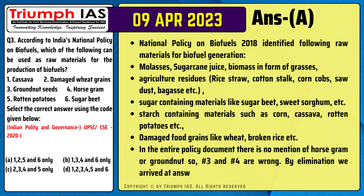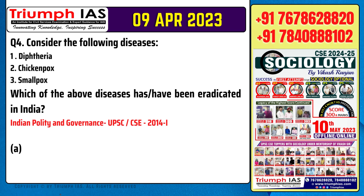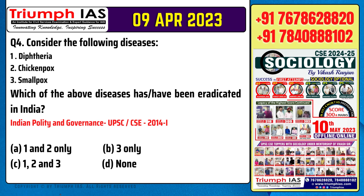Question number 4. Consider the following diseases. Number 1: Diphtheria. Number 2: Chickenpox. Number 3: Smallpox. Which of the above diseases have been eradicated in India?